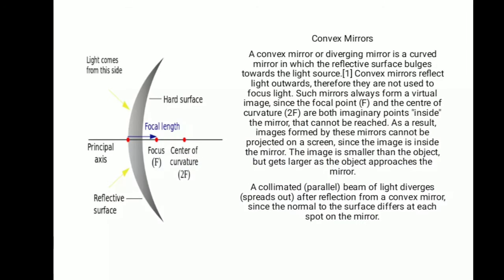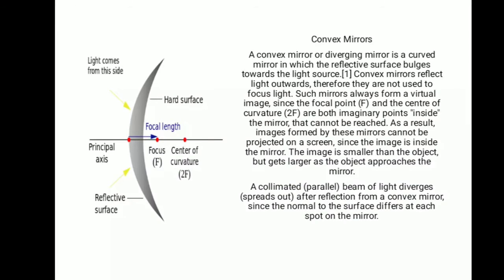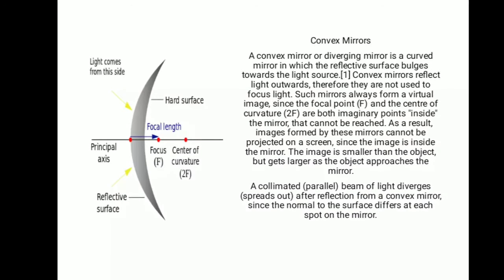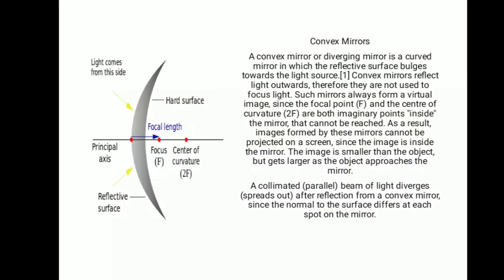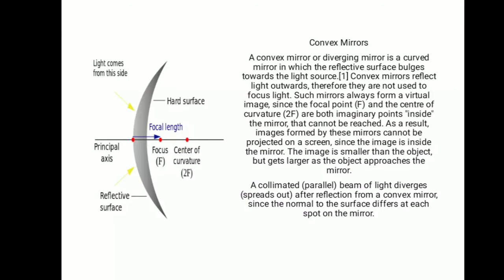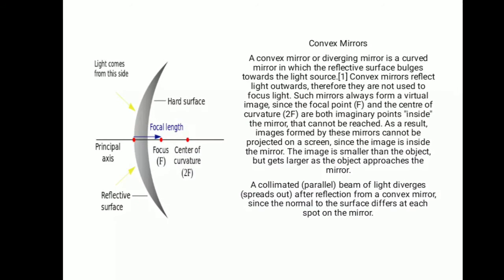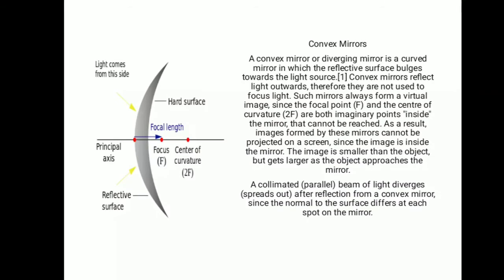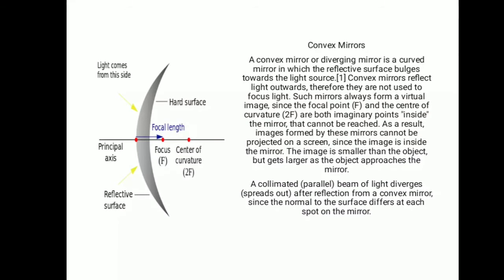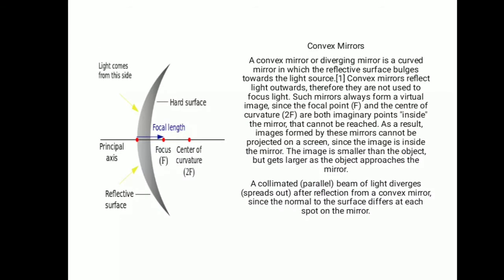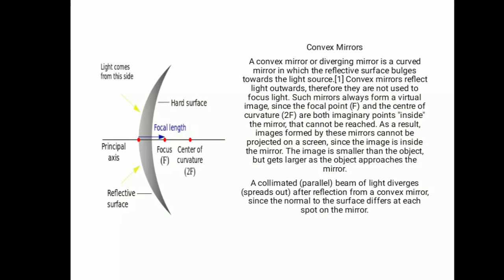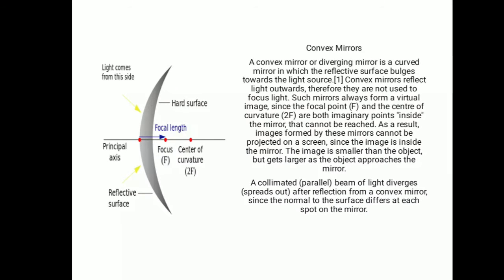Next, we have the convex mirror. The convex mirror has a reflective surface that curves outward. These mirrors always form virtual, erect, and diminished images regardless of the distance between the object and the mirror. When parallel rays of light strike the mirror, they are reflected in a way that they spread out or diverge. For this reason, a convex mirror is also called a diverging mirror. If these reflected rays are extended behind the mirror by dotted lines, they meet at a point called the focus of the convex mirror. Convex mirrors are used in vehicles so that the driver is aware of vehicles coming from behind, and they are also used in streetlight reflectors.